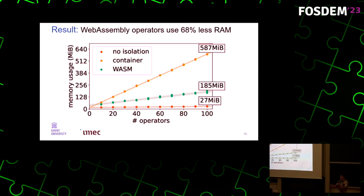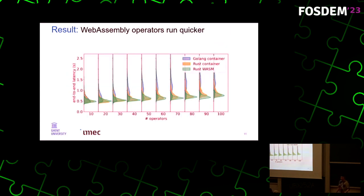The result of running these operators inside of WebAssembly containers is that they use a lot less RAM. Here on this slide at the top, you see 100 operators running as Docker containers, then 100 operators running as WebAssembly containers, and then 100 running just on bare metal. We're not reaching the performance of bare metal — there's still some overhead — however, compared to the Docker containers, we're getting a lot closer. As an advantage we didn't initially see coming, they also have a lot less latency and run a lot quicker. This also shows the difference between Golang operators and Rust operators. Rust has a lot less latency because it's not a garbage-collected language, but we were surprised to see that running them inside of WebAssembly gave them even more consistent latency.